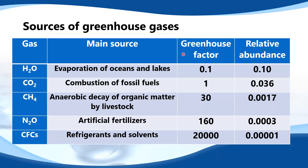Next we look at the greenhouse factor and the relative abundance. As you can see, going from water down to the CFCs, the greenhouse factor is increasing. So CFCs are a far more potent greenhouse gas than water if we just look at the greenhouse factor.